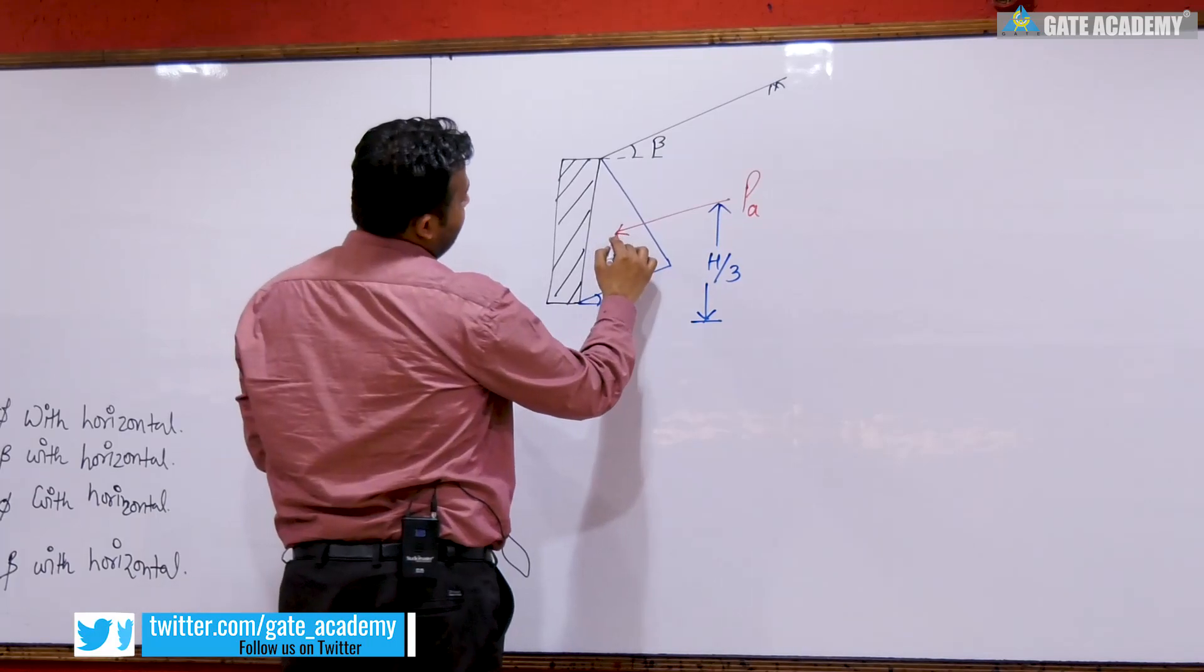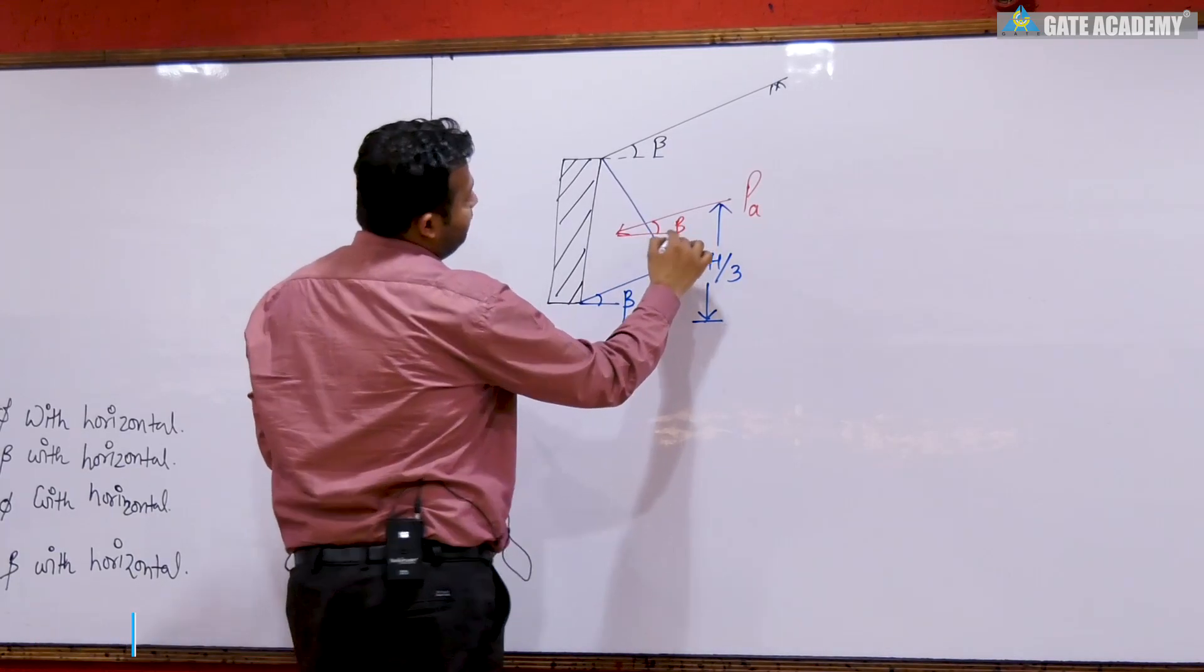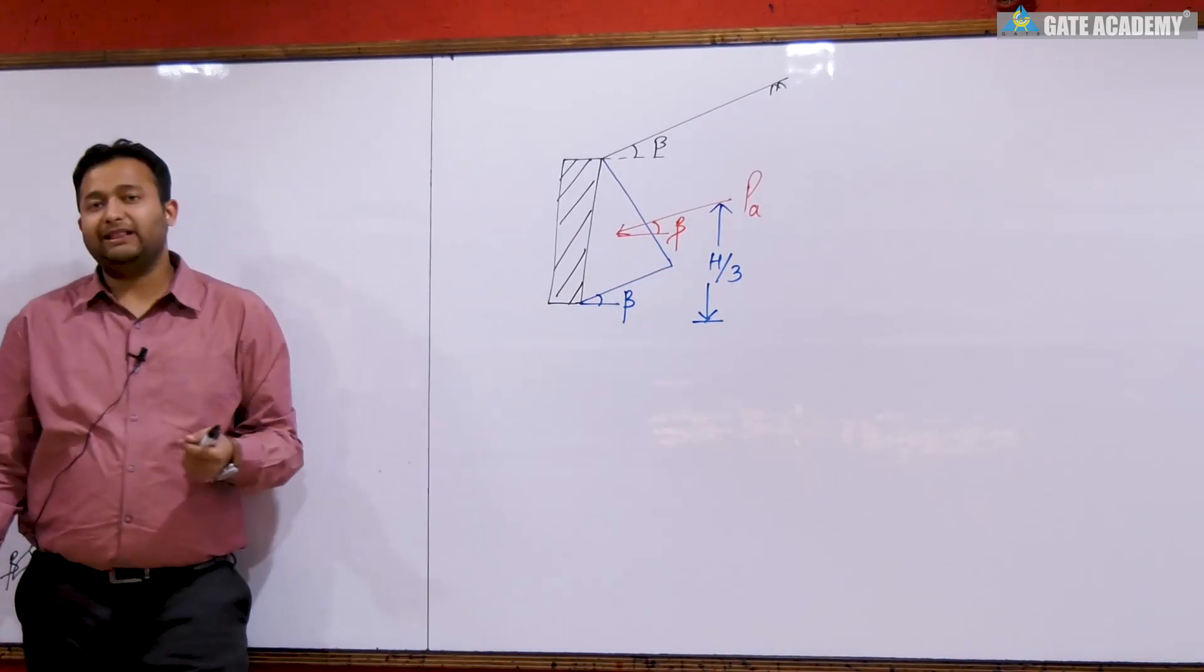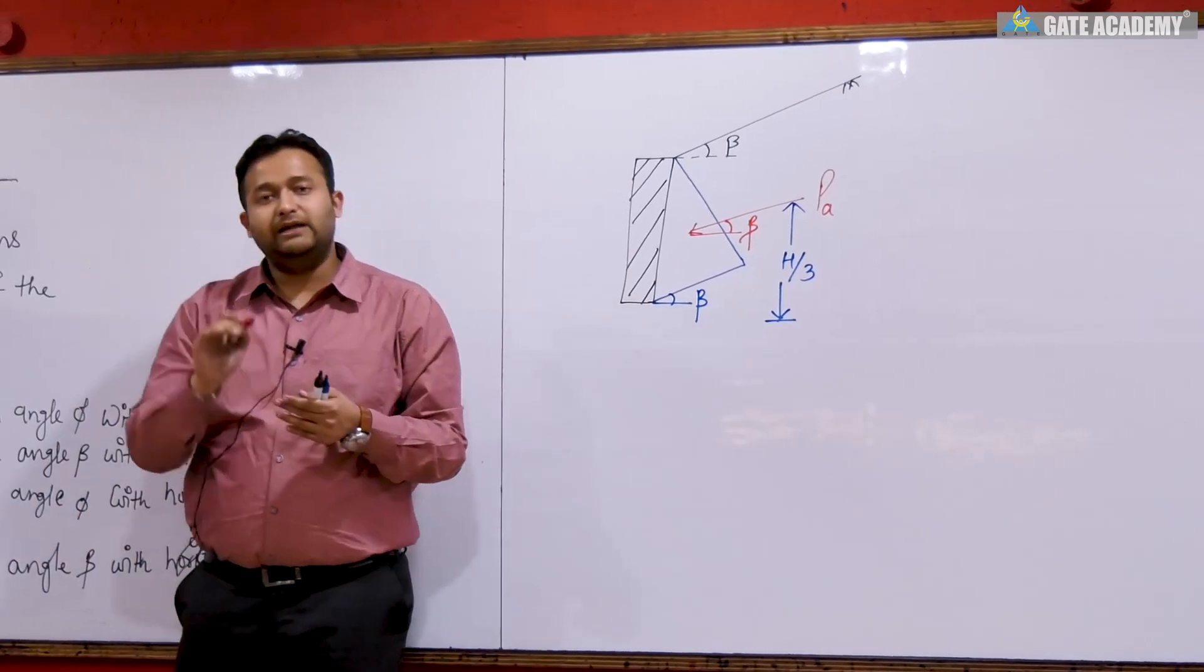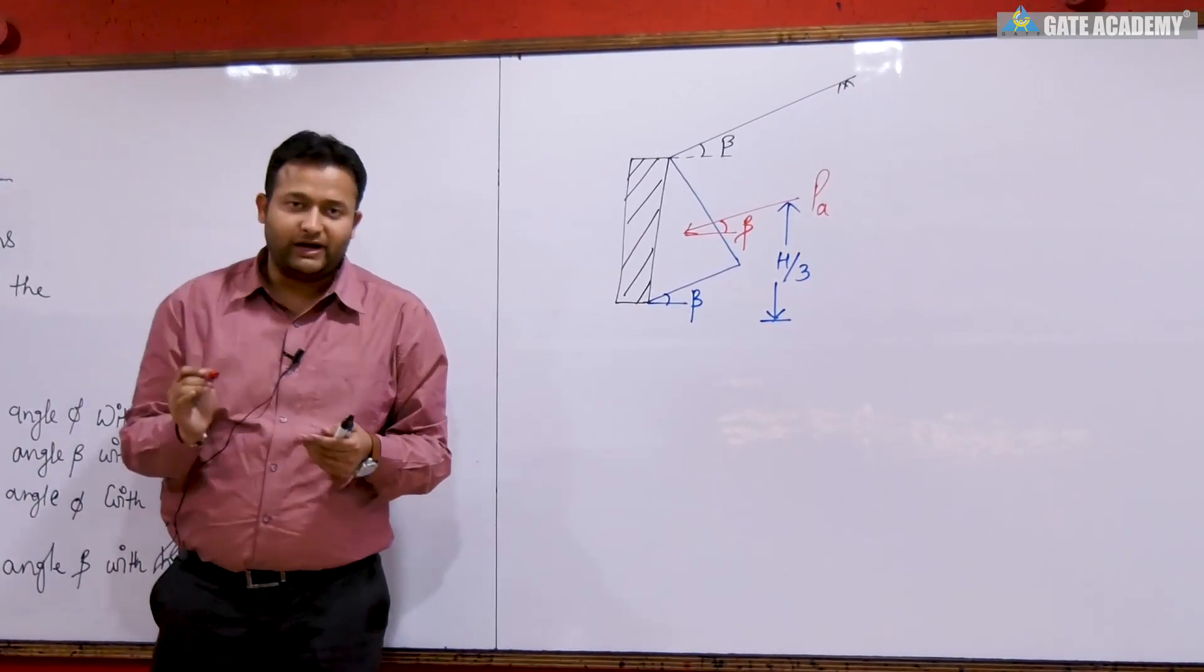And the force is inclined at an angle of beta. This means H by 3 from the base, and the angle is beta with the horizontal.